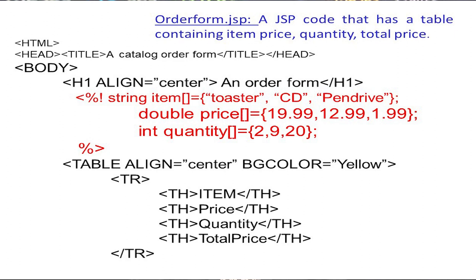We use four pairs of th tags for table headings: Item, Price, Quantity, and Total Price. These four headings will appear at the top of the table when it is rendered.